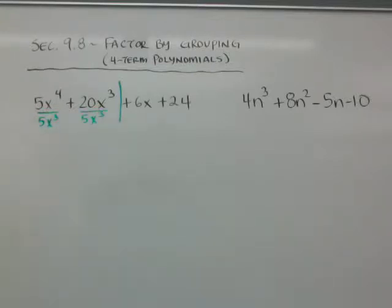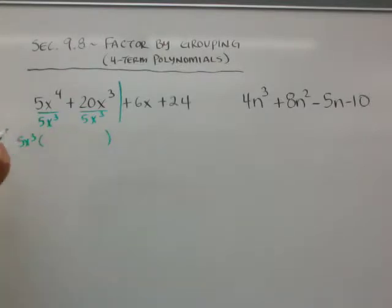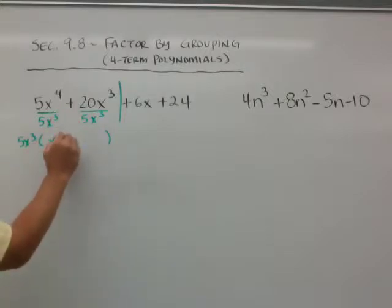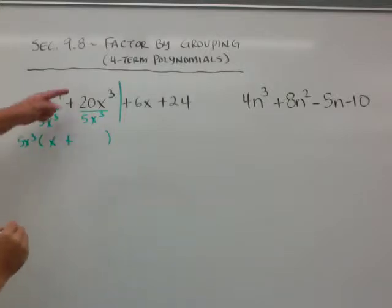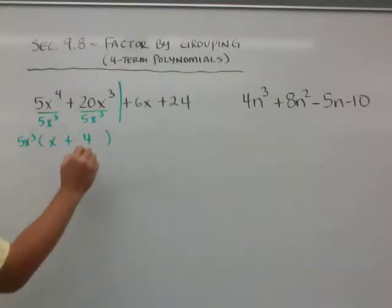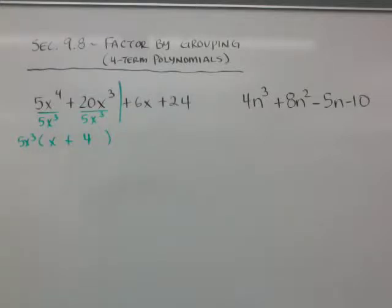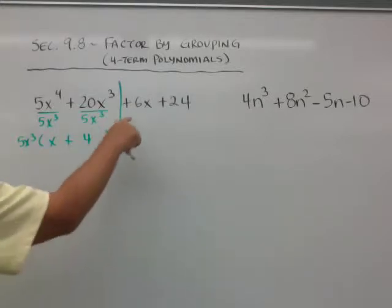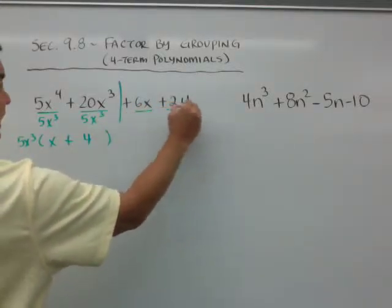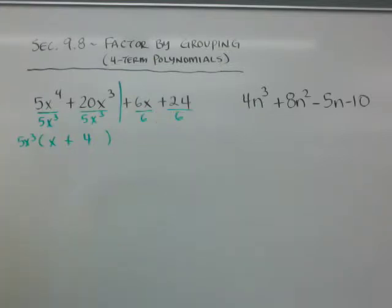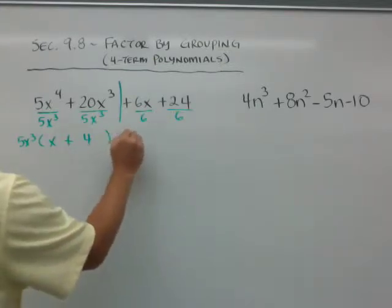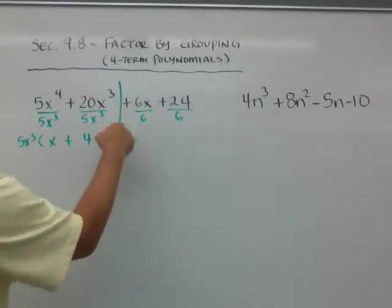So that's my common factor that I can pull out. If I factor out the 5x cubed, and when I divide this, I'm left with an x — drop down the plus sign. When I divide this, I'm left with a 4. And then to the right side, I can see that I can pull a 6 out of both terms. And if I pull a positive 6 out, notice I'm taking on the plus 6.